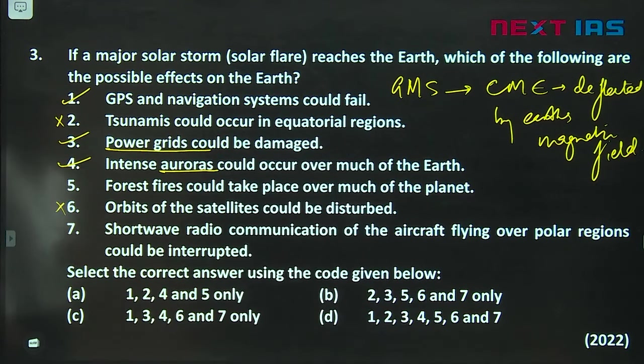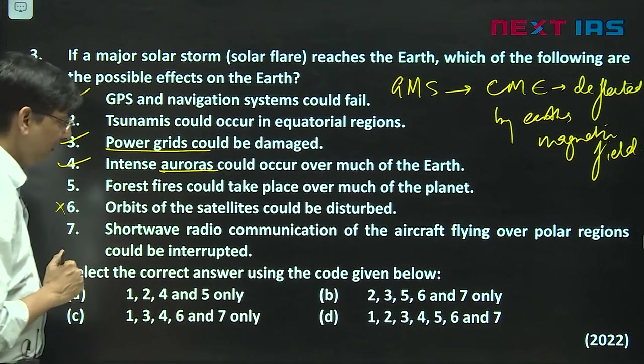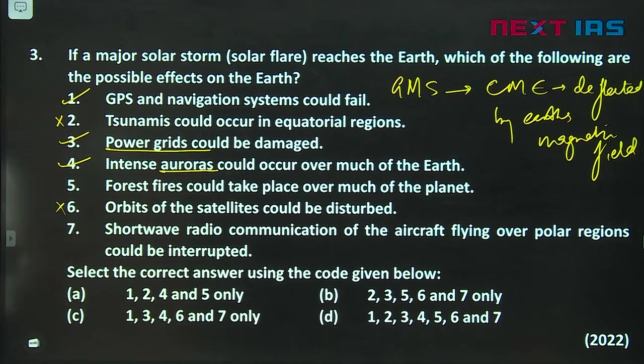Intense auroras, the polar lights, aurora australis and aurora borealis, that will happen. Orbits of the satellites could be disturbed. Now this is one thing. Orbits of the satellites will not be disturbed. How the satellites can be damaged or might get damaged, this is one thing we need to understand. Shortwave radio communication of the aircraft flying over polar region could be interrupted.